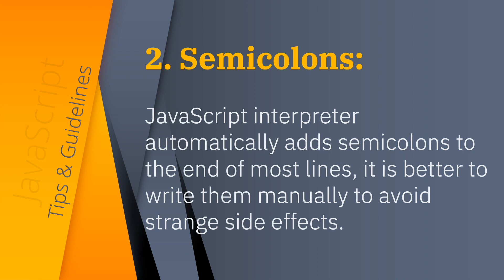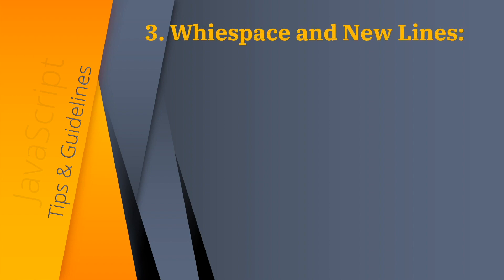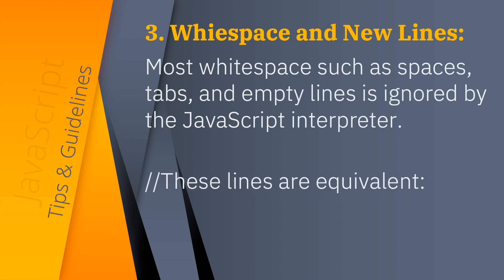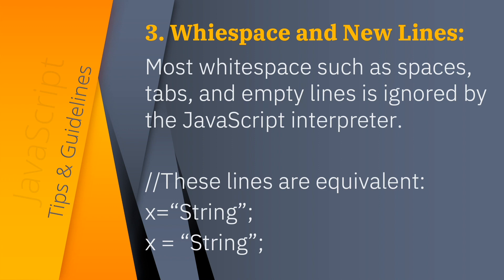Third is whitespace and new lines. Most whitespace — such as spaces, tabs, and empty lines — is ignored by the JavaScript interpreter. In general, it is best to use whitespace when coding JavaScript to aid readability. For example, these two lines are equivalent: x=string is equivalent to x = string. So these are just the same.